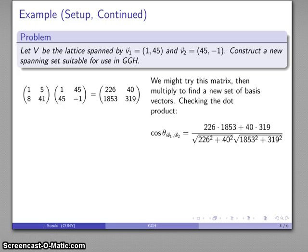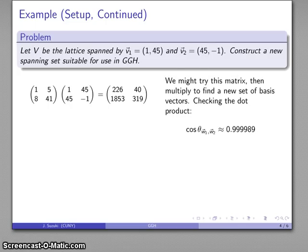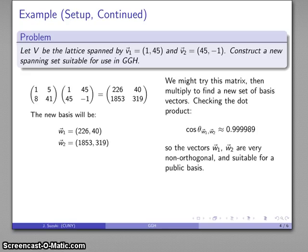We'll find the dot product, and we find that the cosine of the angle between the public vectors is very close to one, which says that the two vectors are very nearly parallel. That says that the rows of our matrix are perfectly good as the public basis for our lattice, and now we have our lattice setup.